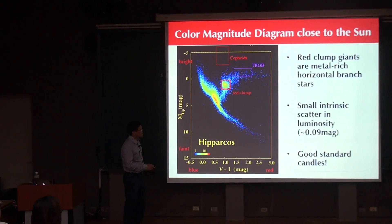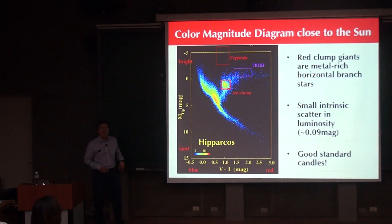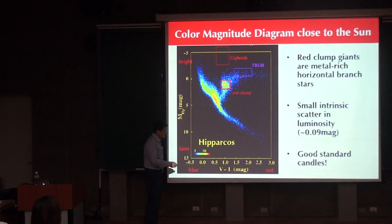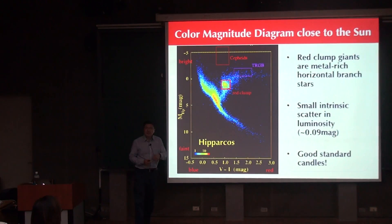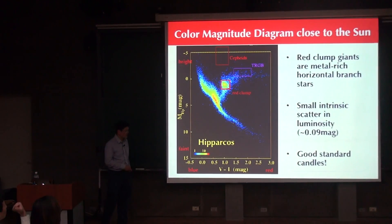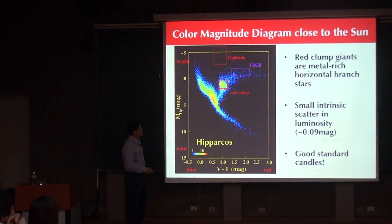The intrinsic luminosity scatter is very small — around 0.1 magnitude — which is very small in astronomy. So basically they are standard candles with the same luminosity, and we can use them as distance indicators. Once we know the distances of these stars, we can use them to trace out the three-dimensional structure of the bar in the Milky Way.